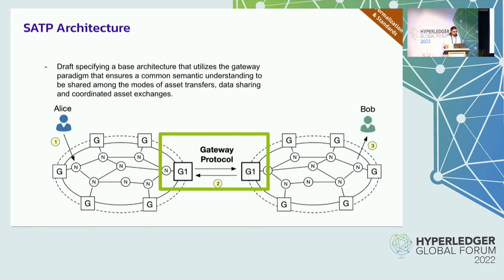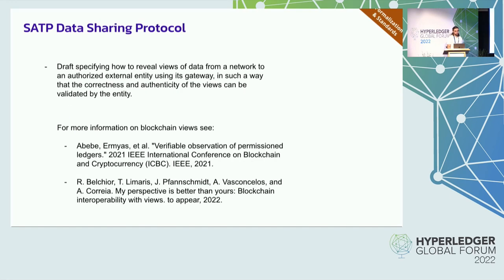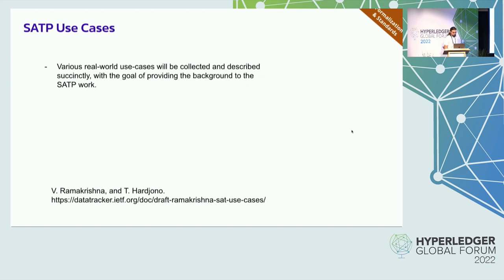Proofs are generated, exchanged, persisted, and the gateway concludes the session. There is a high-level overview of the protocol, and an architecture document that specifies the components and explains the gateway paradigm — showing where gateways are located. We also have a data sharing protocol that uses the concept of views, initially designed by colleagues at IBM, as the proof that some computation happened on a blockchain. Finally, there is a use cases draft by Rama and Thomas depicting several real-world use cases that can benefit from this gateway paradigm.